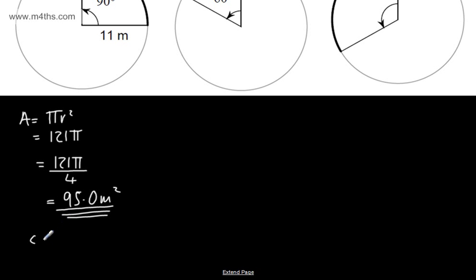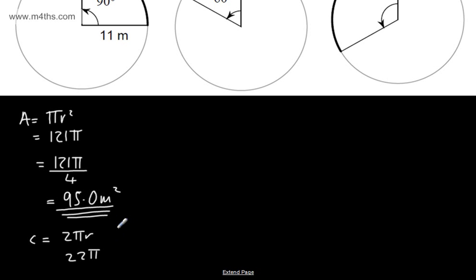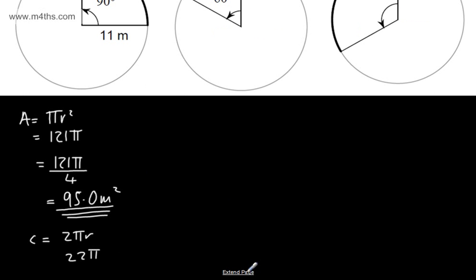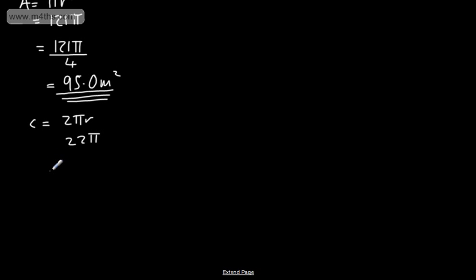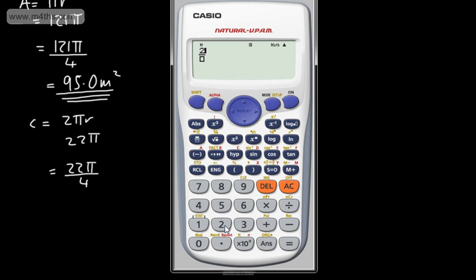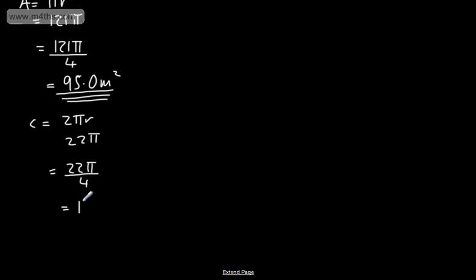For the circumference of the circle, it would be 2πr — that's 2 × 11 × π = 22π, which gives the entire circle. I need to divide my answer by four, so that's 22π ÷ 4. In the calculator: 22 × π ÷ 4 gives us 17.3 metres, correct to one decimal place. That's quite straightforward.